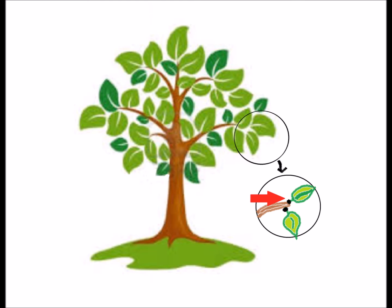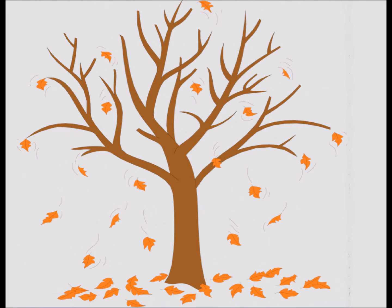Trees seal the spots where the leaves are attached. Every leaf develops small cells which cut the leaf away from the stem. Then a breeze comes along and takes the dangling leaves away.